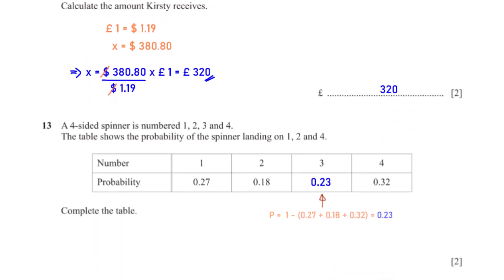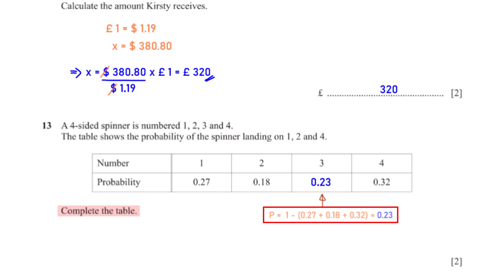A four-sided spinner is numbered 1, 2, 3, and 4. The table shows the probability of the spinner landing on 1, 2, and 4. Complete the table. The sum of all probabilities must add up to 1, so to get the probability of landing on 3, we subtract the sum of 0.27, 0.18, and 0.32 from 1. This gives us 0.23.